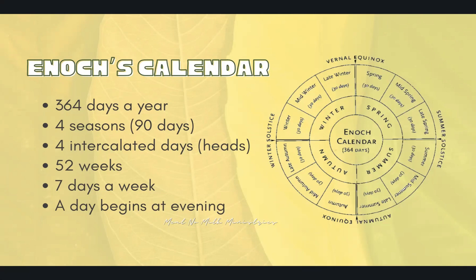There are several other elements to his calendar stated in the book of Enoch, but I won't go too much into that right now. As you see here, we have 364 days in the middle, four seasons starting with spring, then summer, going to autumn, and winter being the last. It has spring having 30 days, mid-spring 30 days, late spring 30 days. And then there is this middle portion — the four intercalated days or heads of the calendar. I have said in my posts from spring to fall, a lot of times in my greetings, I will say 'Chag Sameach Rosh Kodesh.'